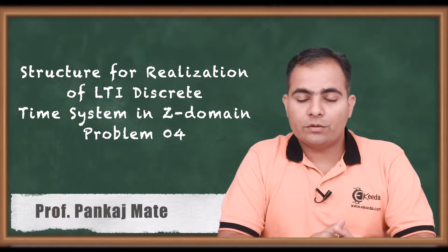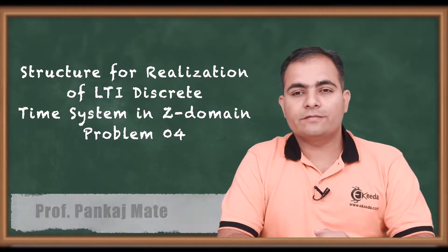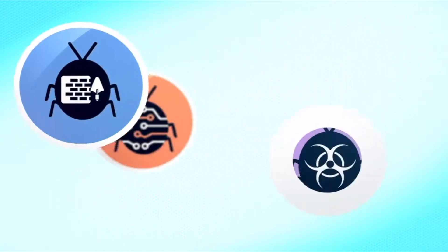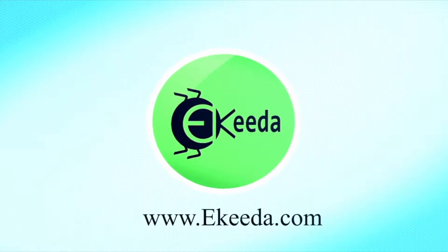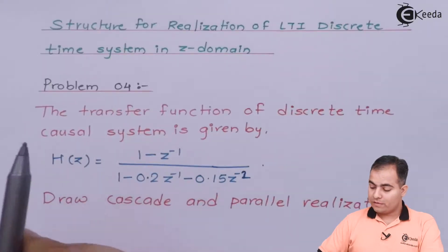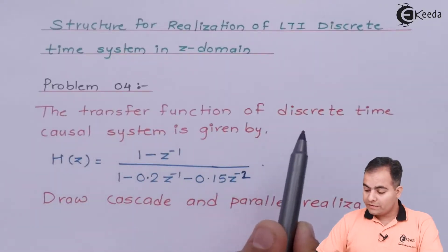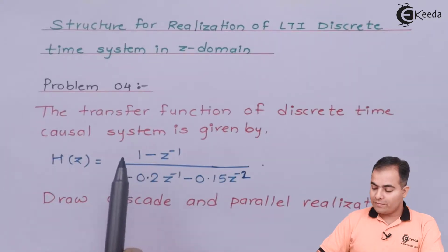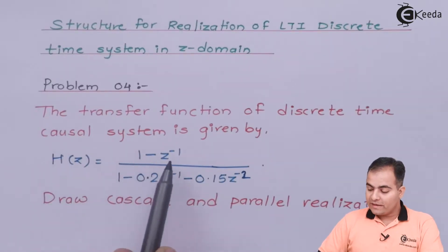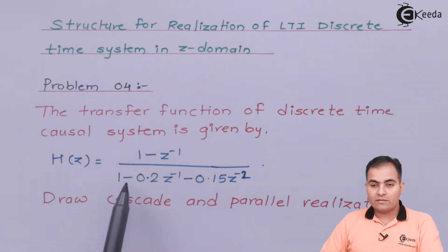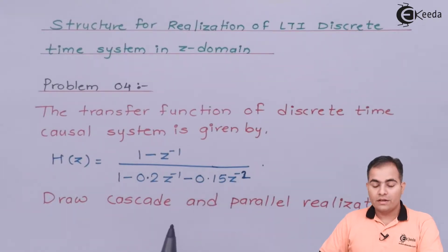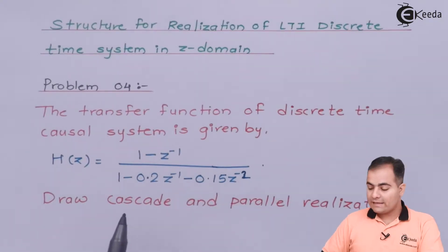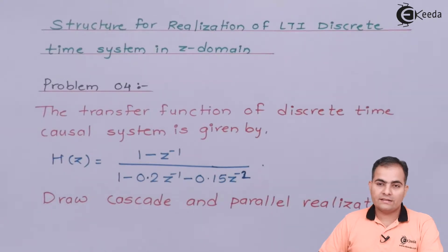We will see the question first and then move on to the solution. Problem number 4: the transfer function of a discrete time causal system is given by H(z) = (1 - z⁻¹) / (1 - 0.2z⁻¹ - 0.15z⁻²). We are asked to draw a cascade and parallel realization.